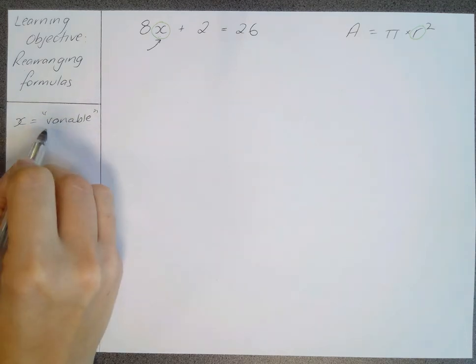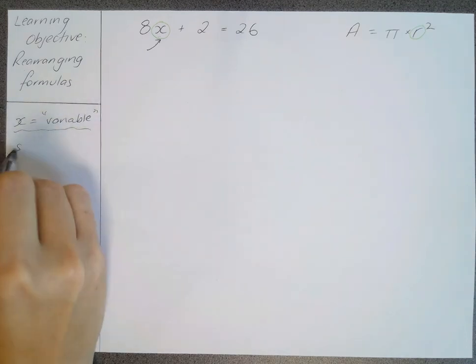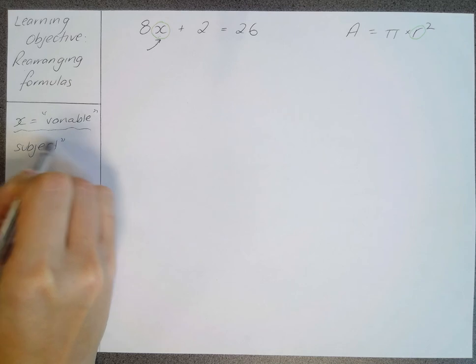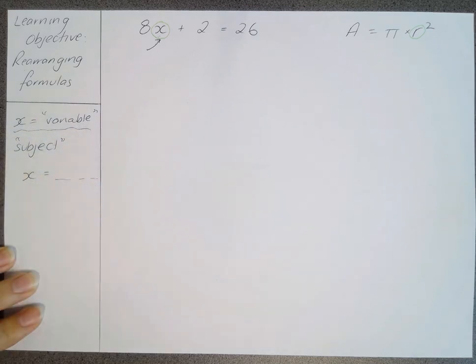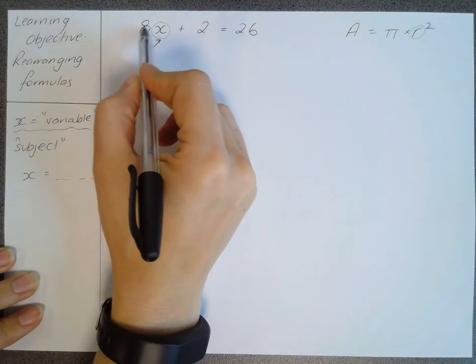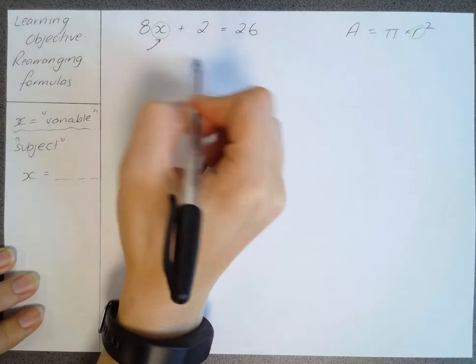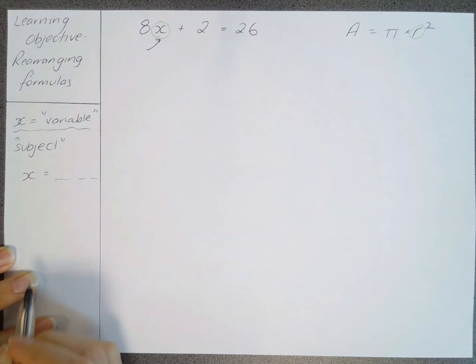We are rearranging so that x is our subject. When I say subject, I mean it is the thing on its own with everything else on the other side of the equals sign. So it's really important that what we're trying to do is move all these other things, these 8 and these 2, away from it to the other side of the equals sign.